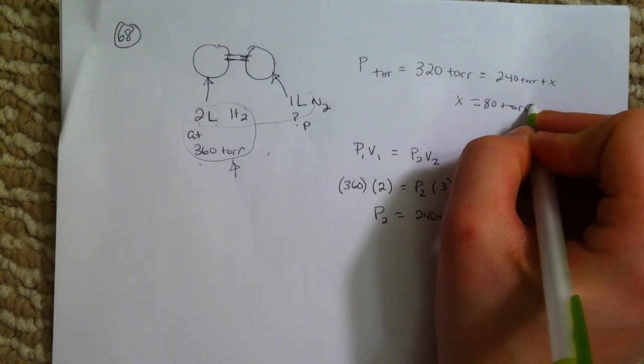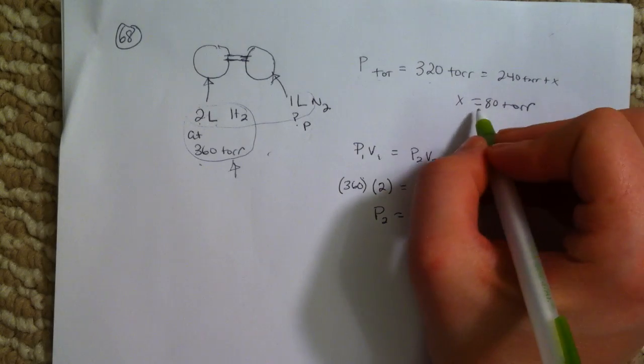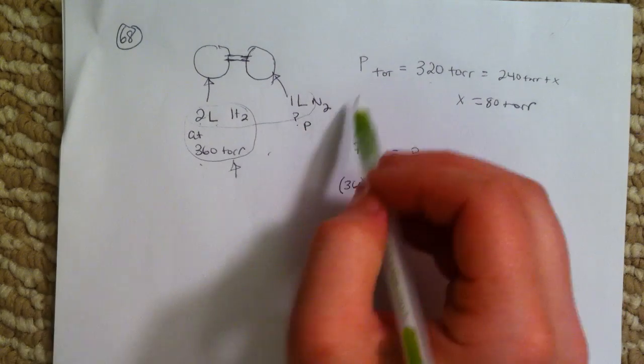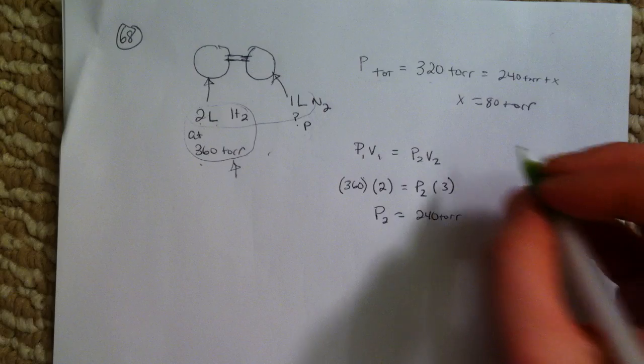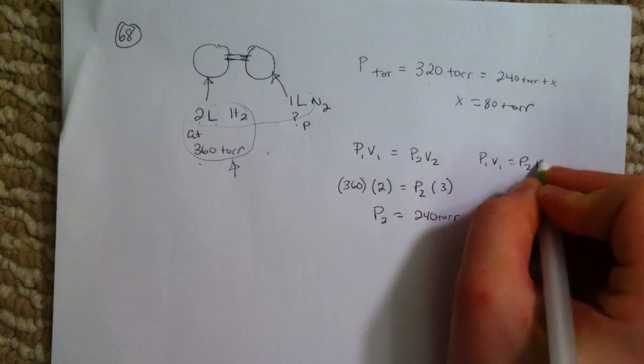And then from there, if it's 80 torr after it's in 3 liters, we can work backwards. So we know P1V1 equals P2V2.